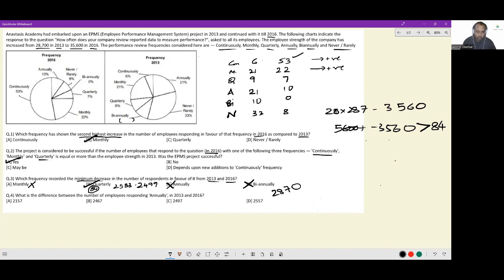Next is what is the difference between the number of employees responding annually in 2013 and 2016? So 2,870 and 287, this is the number of employees who voted annually in 2013, we get 6,027 minus 3,560, so 2,467 or option B. This will be the final answer and that is the entirety of this set.